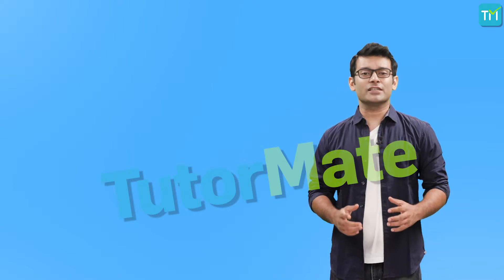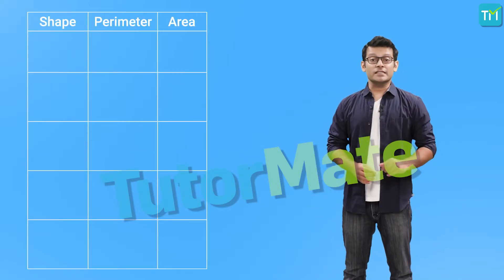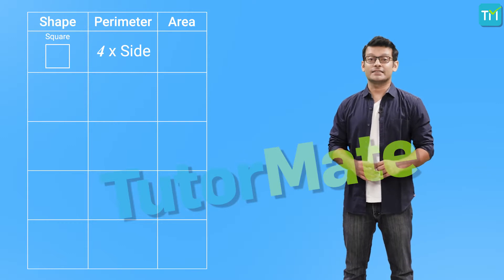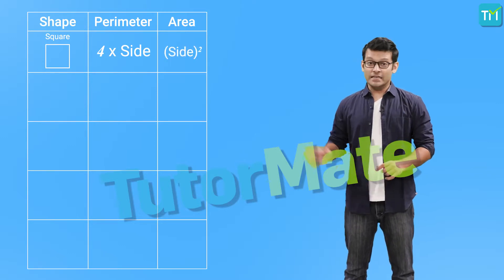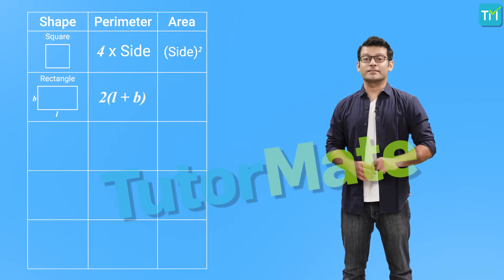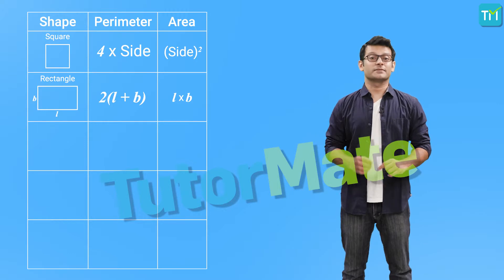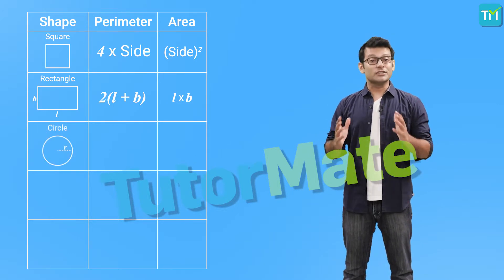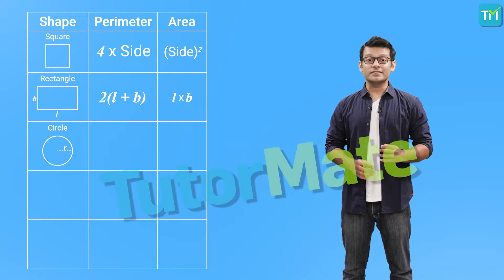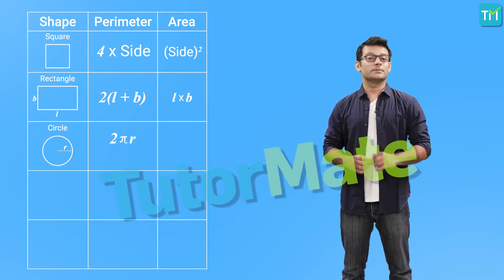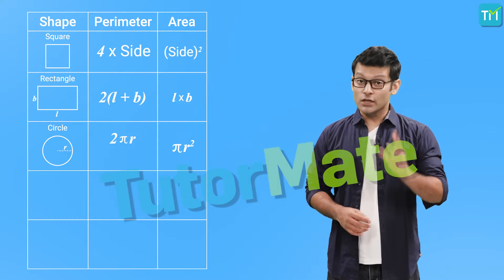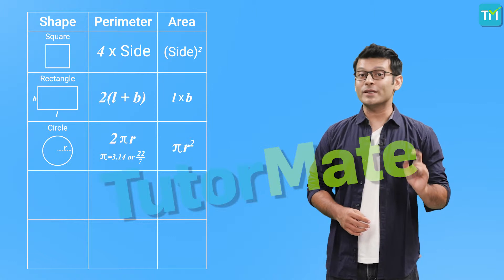Let us summarize the perimeters and areas of some common shapes. A square has perimeter equal to 4 times the side length, and area equal to side squared. A rectangle has perimeter equal to twice the sum of length plus breadth, and area equal to length times breadth. A circle has no sides; its perimeter is called the circumference, given as 2πr, and its area is πr². Note that π equals 3.14, or 22/7.